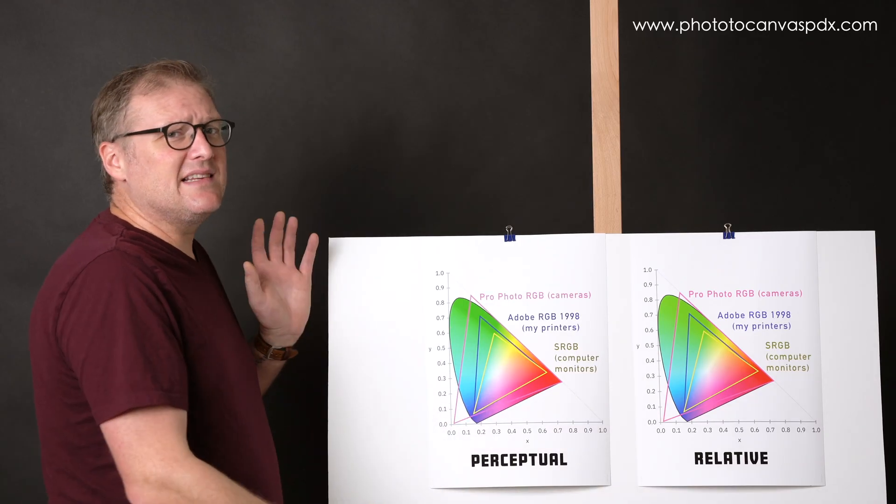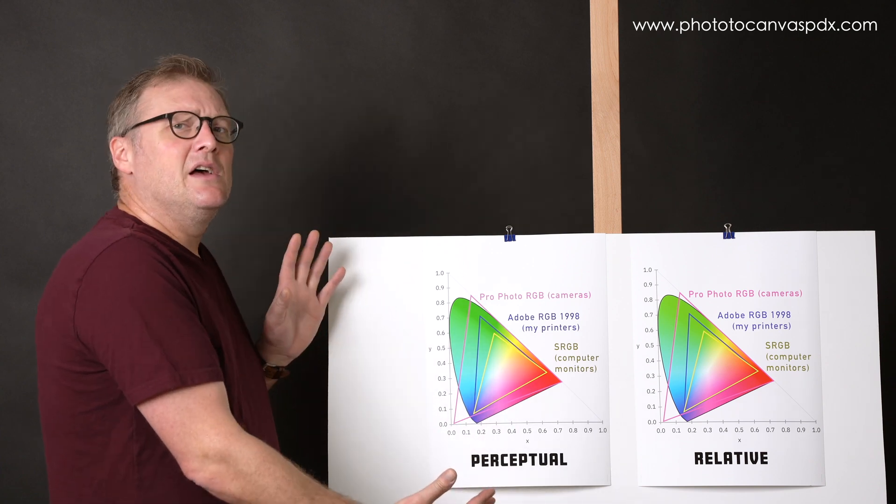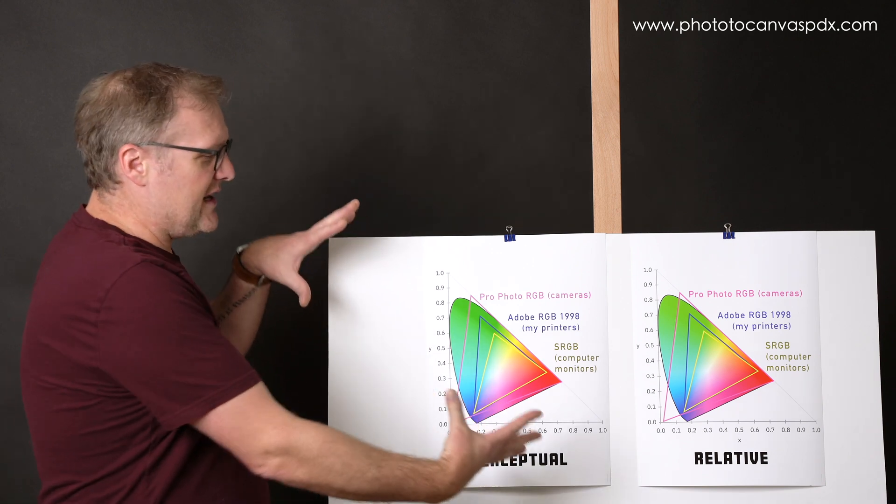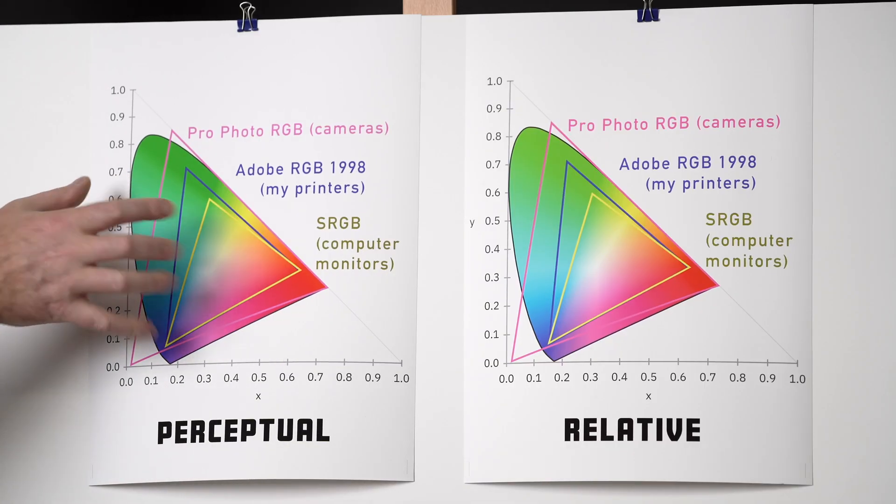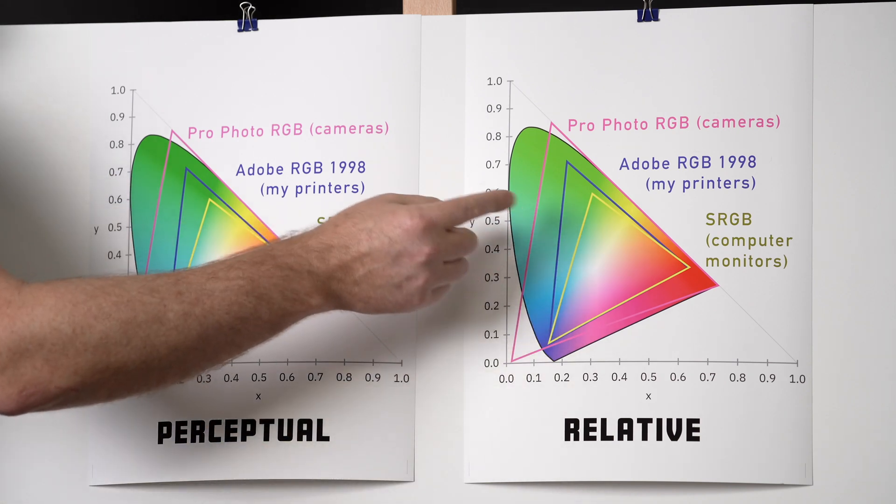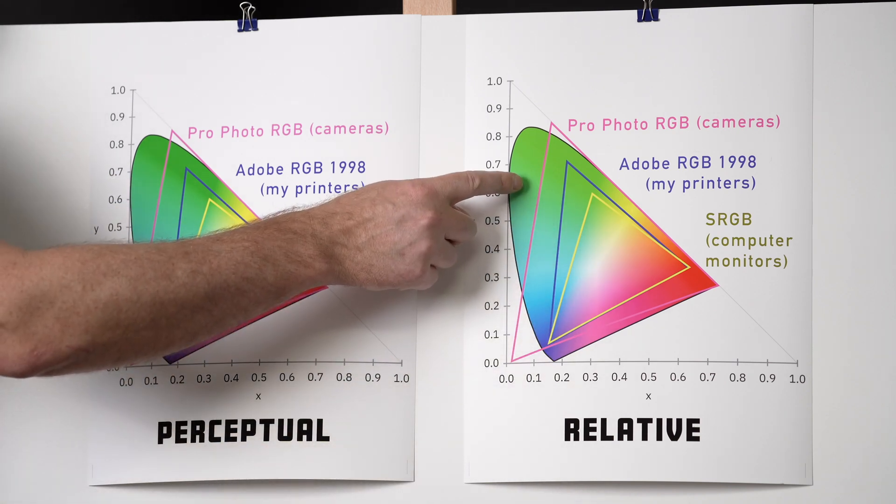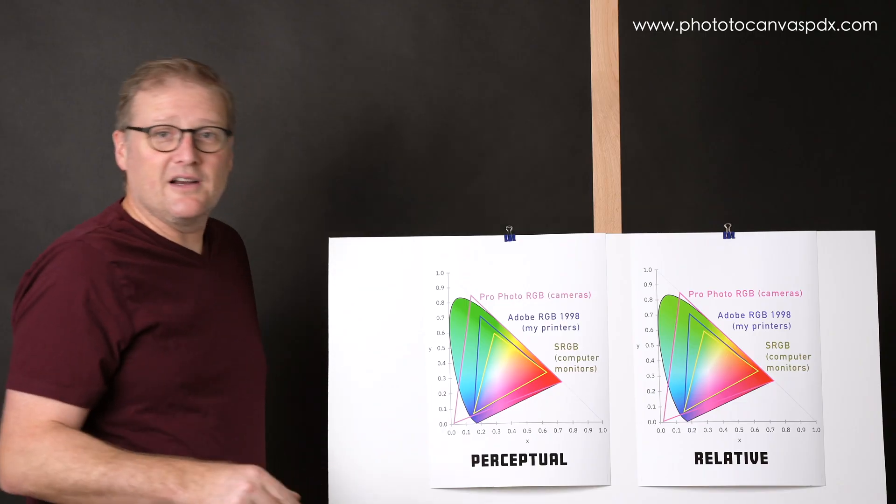Now perceptual, that's going to scale everything. That's going to shift all the colors in the image to be in gamut. So it's going to equally squish them together. If you have a color out here, it's going to shift everything until that color is within gamut. In relative colorimetric, if you have a color out here, it's going to shift just that color. But these ones are going to stay the same.